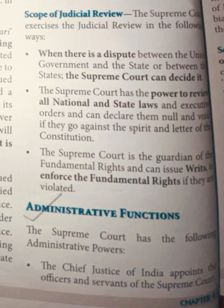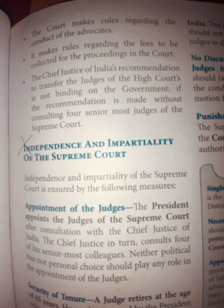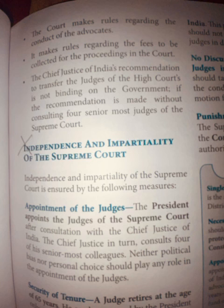Administrative functions — last topic of this chapter: First, the Chief Justice of India appoints the officers and servants of the Supreme Court. Second, the court makes rules regarding the conduct of advocates. Third, it makes rules regarding the fees to be collected for proceedings in the court. Fourth, the Chief Justice of India makes recommendations to transfer judges from one High Court to another, though this recommendation is not binding on the government — the government may or may not accept it, especially if the recommendation is made without consulting the four senior-most judges of the Supreme Court.